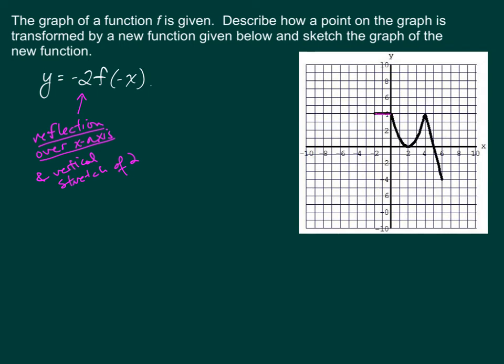On the original function, if we're going to reflect over the x-axis, that means we're multiplying all y-values by a negative. So all of the y-coordinates will change signs. All of these y-coordinates are positive, so I will flip them. The positive part and the negative part of the function will switch. This pink graph is the reflection of the original function.